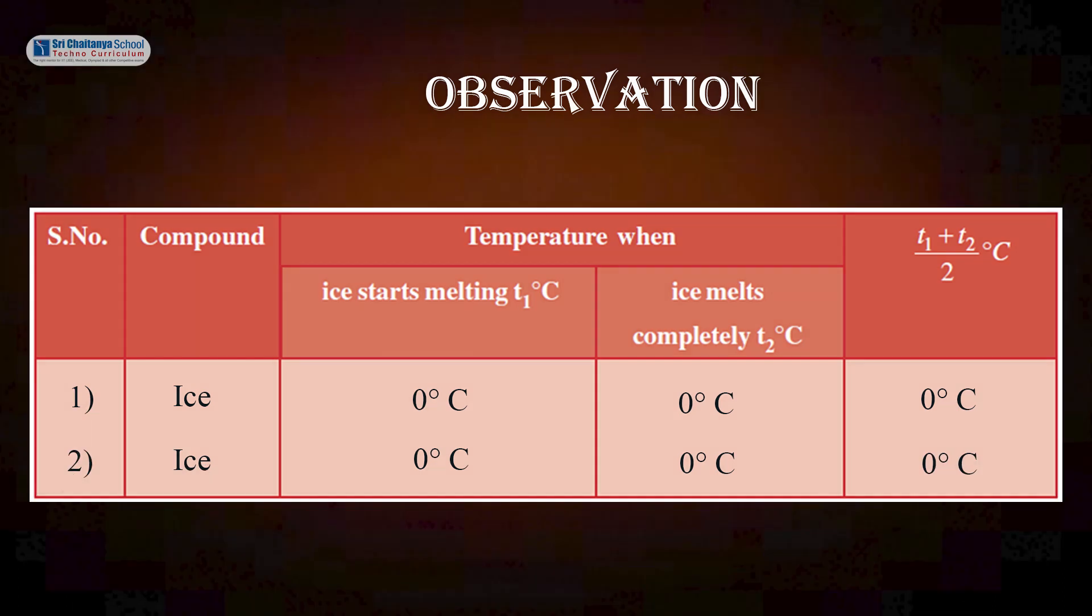Observation: The first compound is ice. Ice starts melting at 0 degree centigrade. Ice melts completely at 0 degree centigrade. The mean melting point of a given sample of ice is 0 degree centigrade.